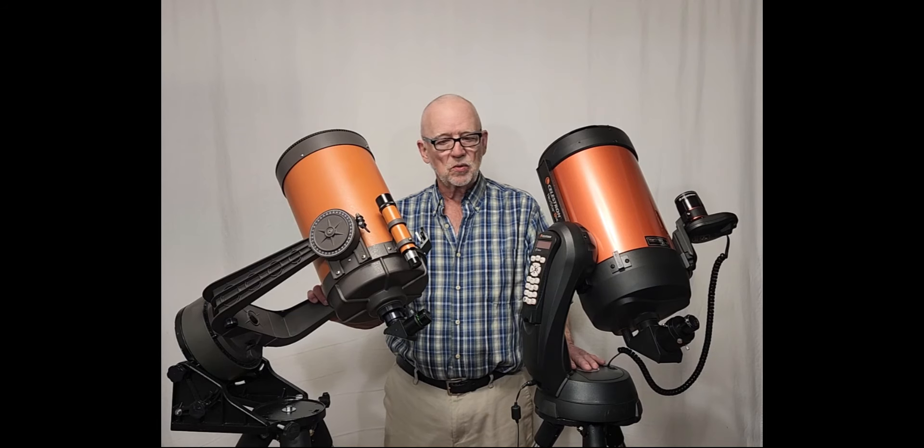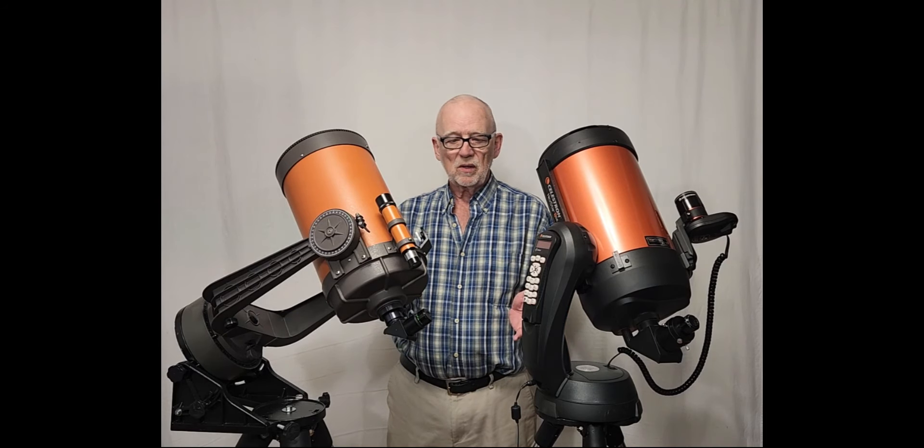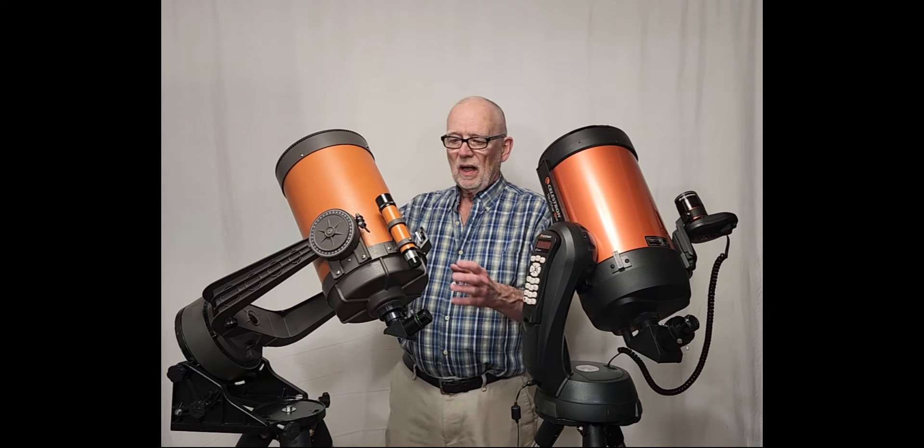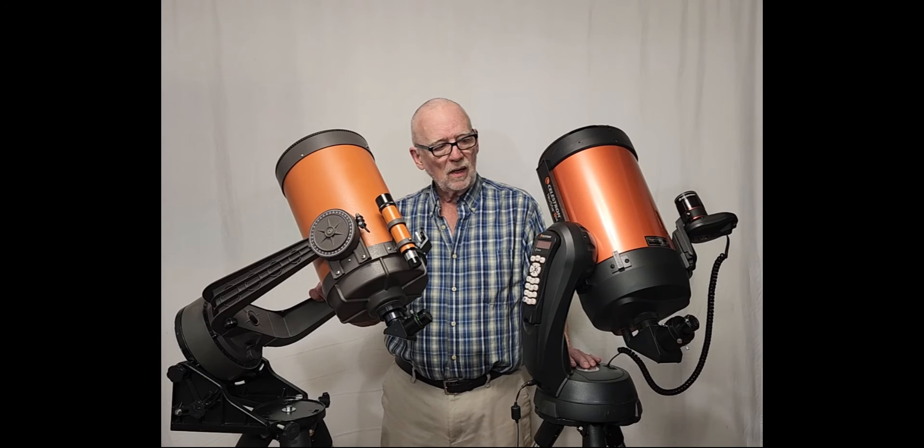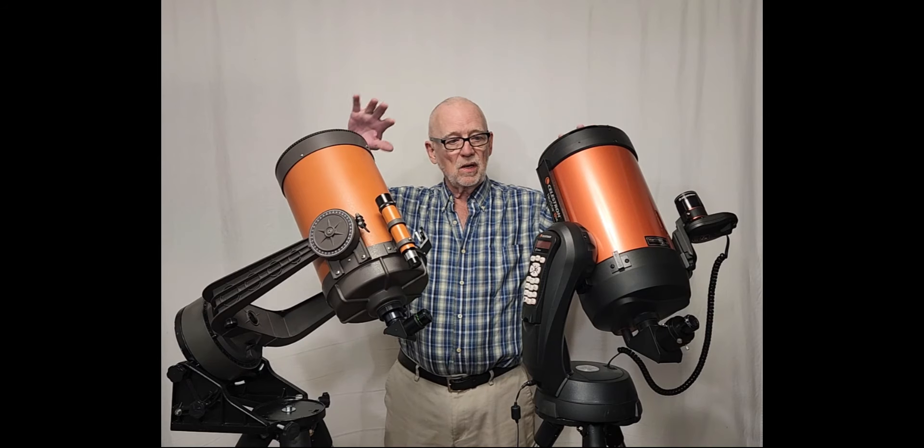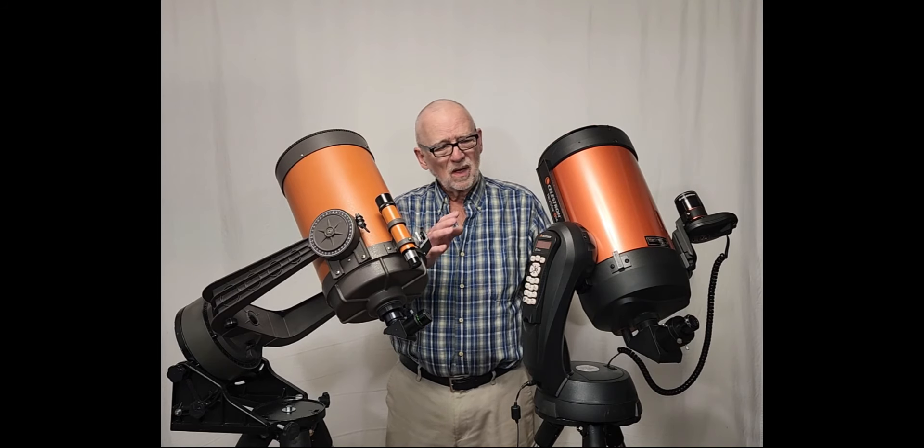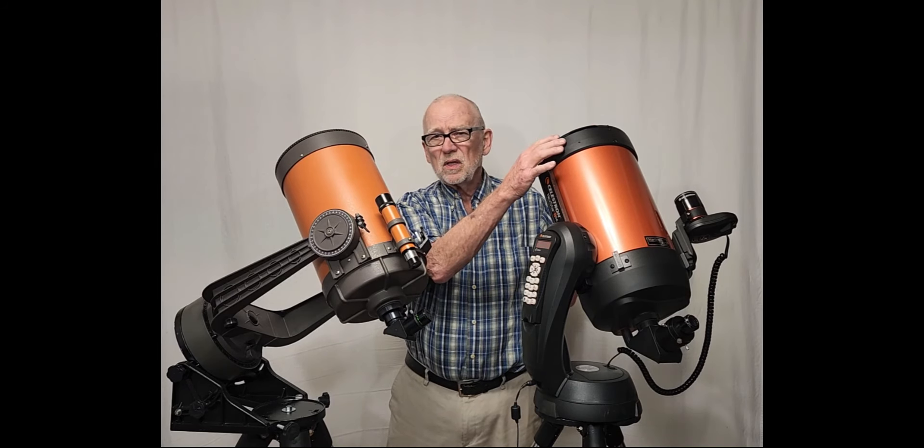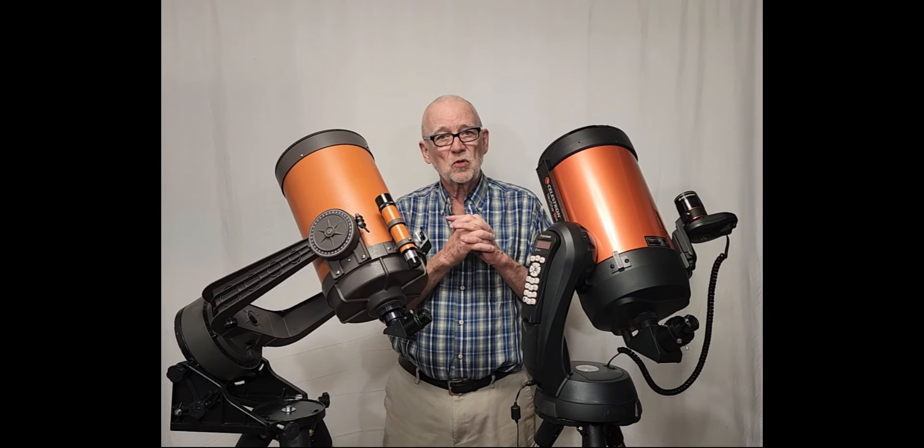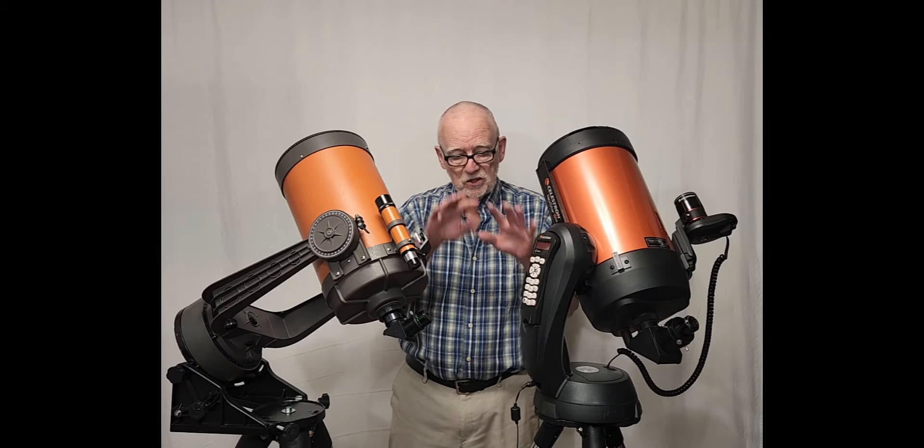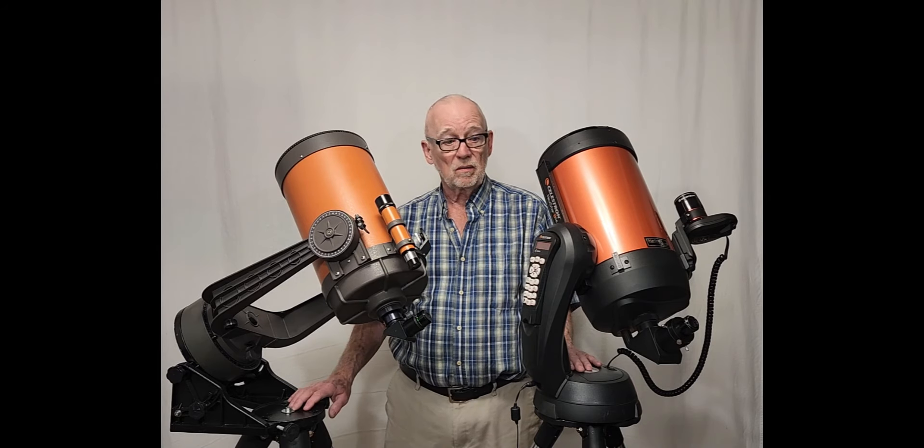When you look at these two things next to each other you can see a clear family resemblance. They're both orange and they both are 8 inch Schmidt Cassegrain telescopes. So the basic optical package here is identical. There's a slight difference because the coating has improved but I can't see much difference through the eyepiece. The dramatic changes of course are down below on the mounts.